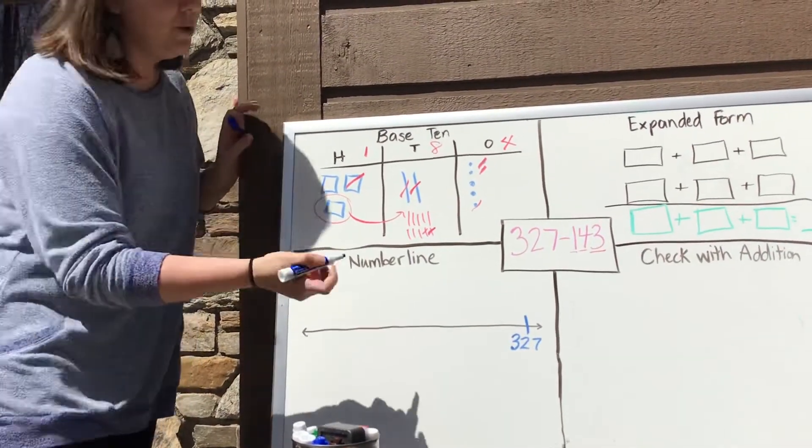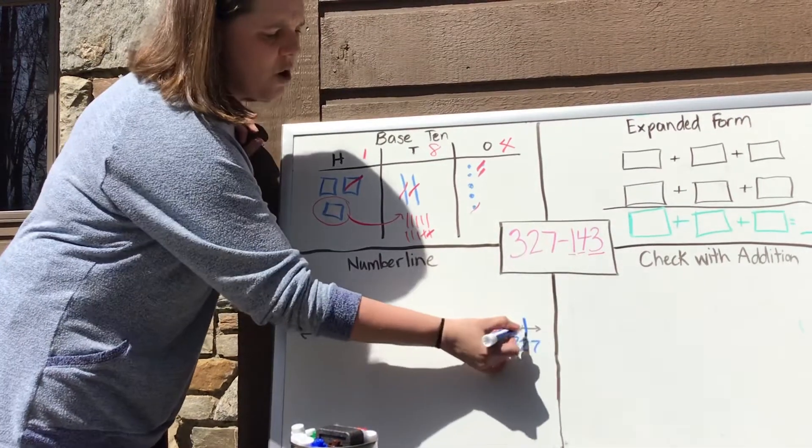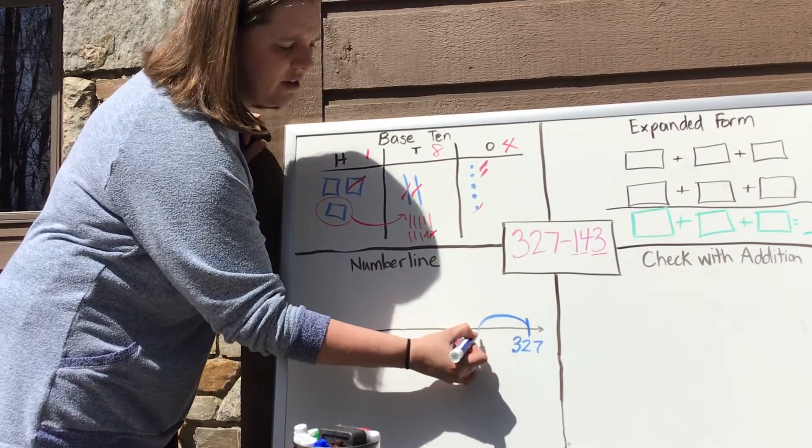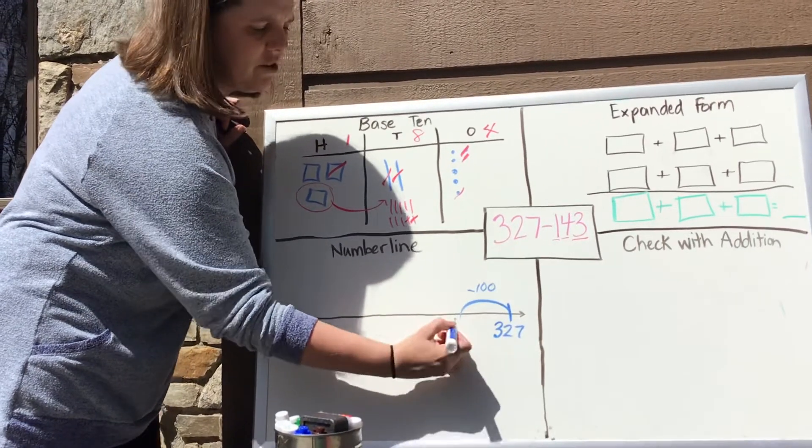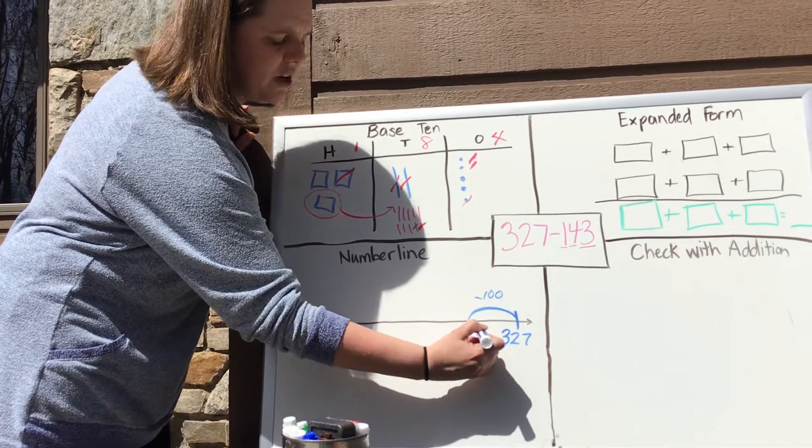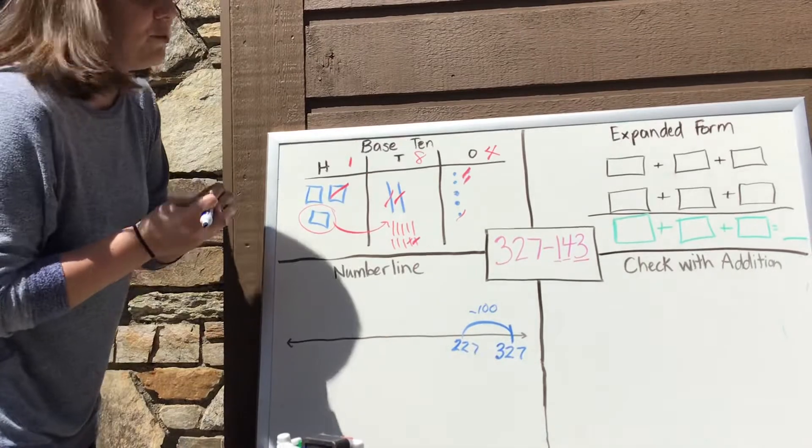Then I'm going to work my way backwards. I'm going to subtract 100. So 100 less than 327 is 227.